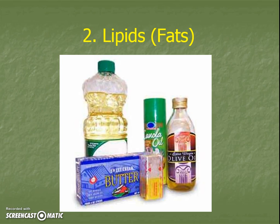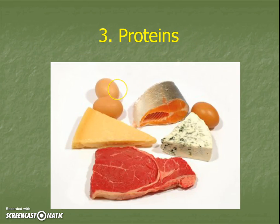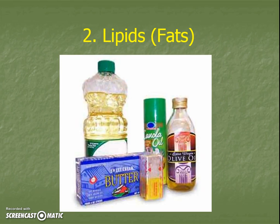Our second type of macromolecule is lipids. You've probably heard these called fats before. These are our oils, our butters. We don't want tons of this, but actually we need some of it to survive — and we'll talk about why that is in a little bit. So this is our second type of macromolecule.